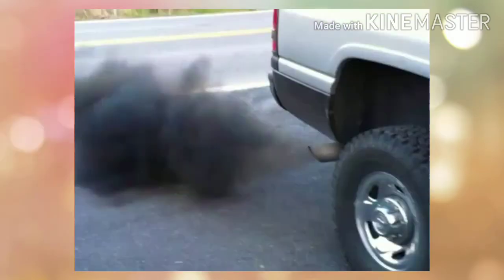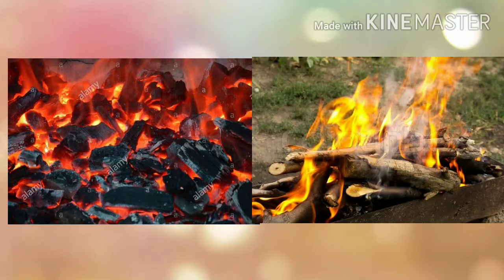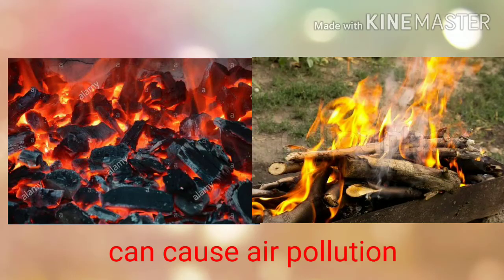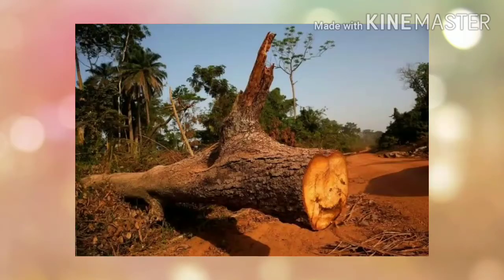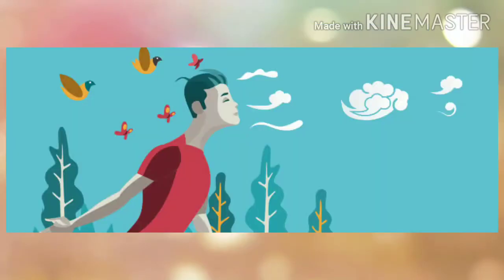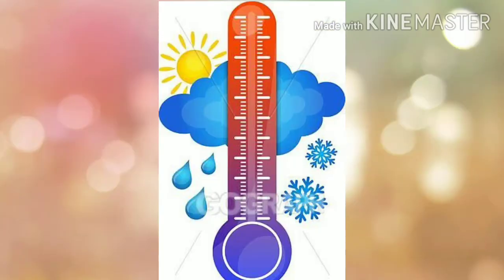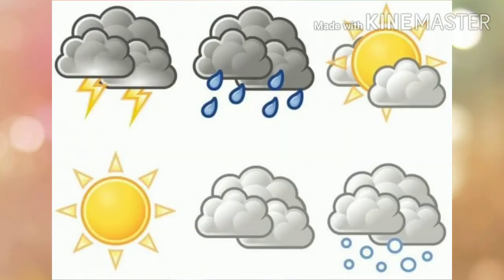Smoke from the burning of oil and coal and wood can also cause air pollution. Cutting down trees is also harmful to our environment. It affects the quality of the air that we breathe. It causes a rapid change in the temperature and in turn changes the weather patterns, which leads to other environmental concerns.